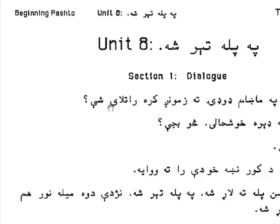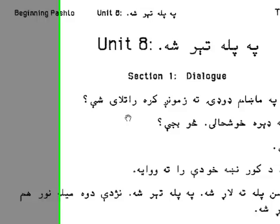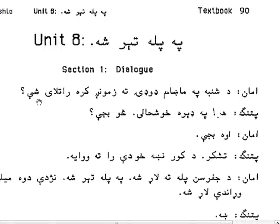Zmun krah ra tle she. Ra means here, tle means to go or move, and she means can you?